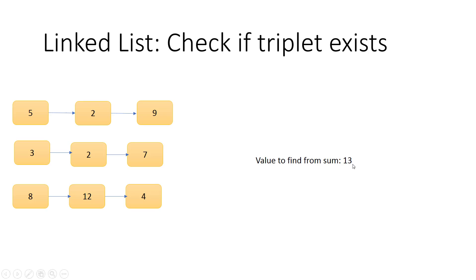For example, if we want to find 13, one option is 3 plus 2 plus 8, which equals 13. So our answer should return true or false — whether such a triplet exists.